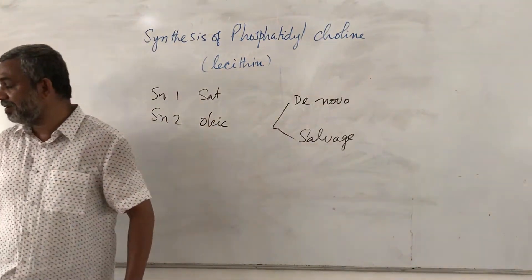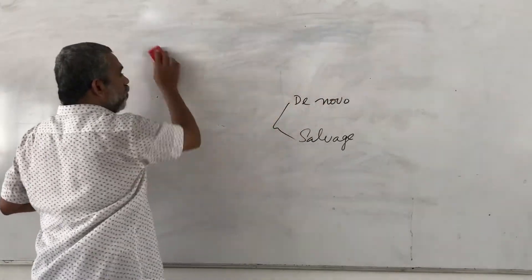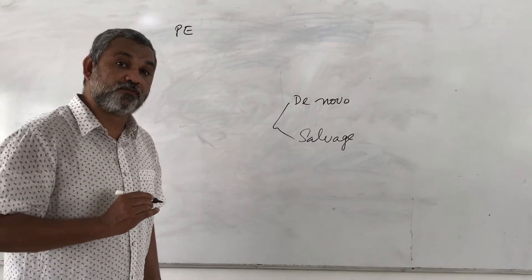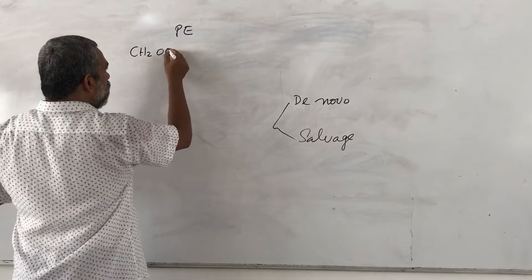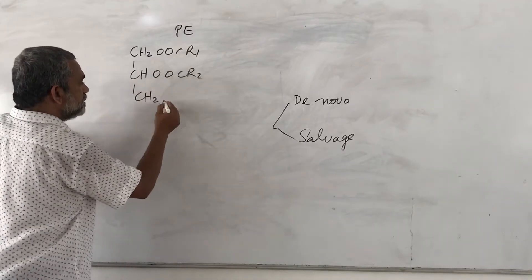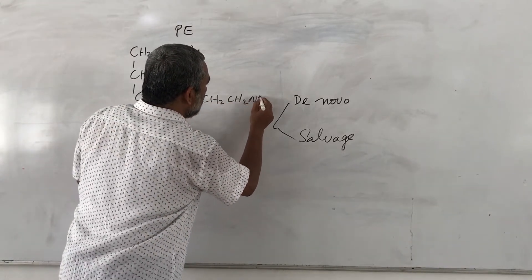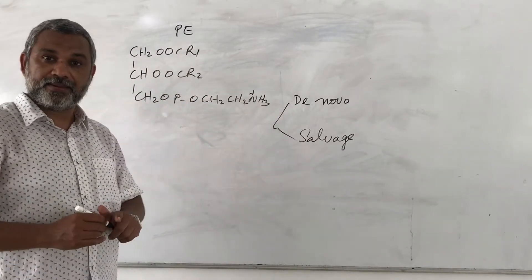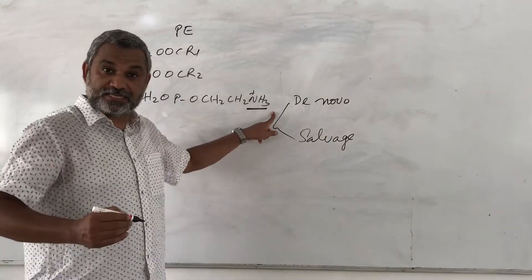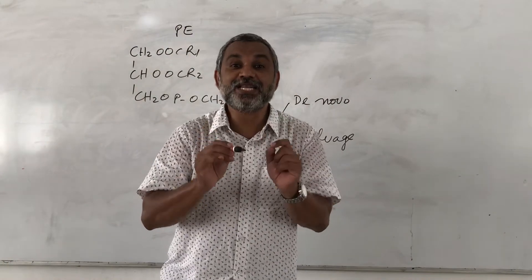Our starting material for the de novo pathway is going to be phosphatidylethanolamine. The structure of phosphatidylethanolamine is: CH2OOCR1 (first fatty acid attached to glycerol), the second fatty acid attached at SN2, and the third carbon of glycerol carries the phosphate head group — CH2CH2NH3. If you look at the structure of phosphatidylcholine, the structural difference happens only at the head group, where there will be three methyl groups attached. The methyl donor in biological systems is S-adenosylmethionine (SAM).